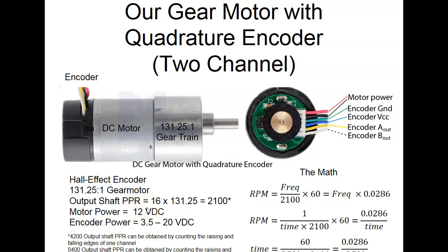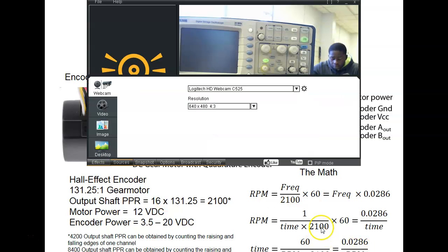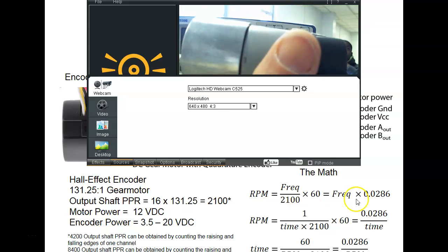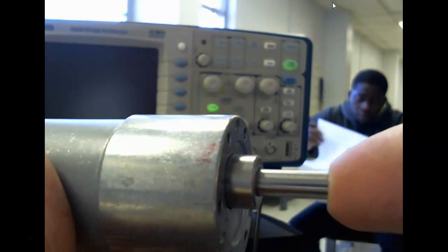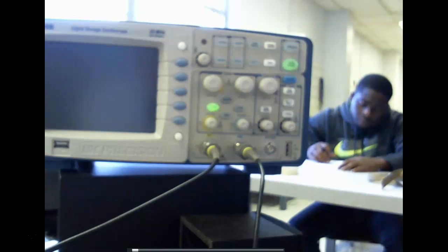This is our quadrature encoder — a combination of a gear and a motor that goes to a gearbox. It's a 135.5 to 1 ratio, and this is what we're trying to set the speed on. The quadrature encoder only gives us 16 pulses per revolution, but we're not concerned with how fast the motor runs — we're concerned with how fast the gear shaft is working. So we take 16 times 135.5, which gives us 2,100 pulses per revolution. We've got this up on our oscilloscope.